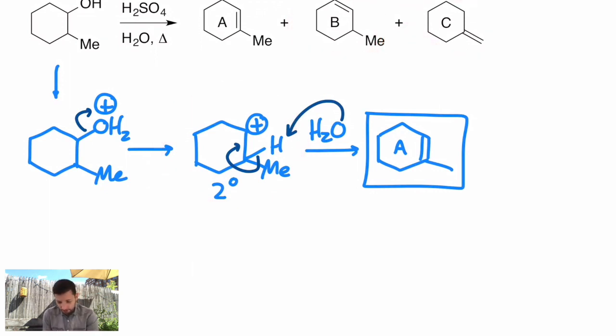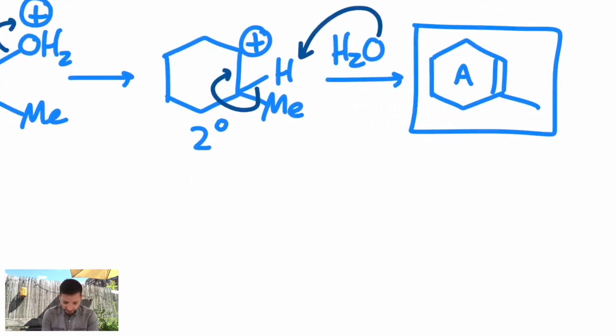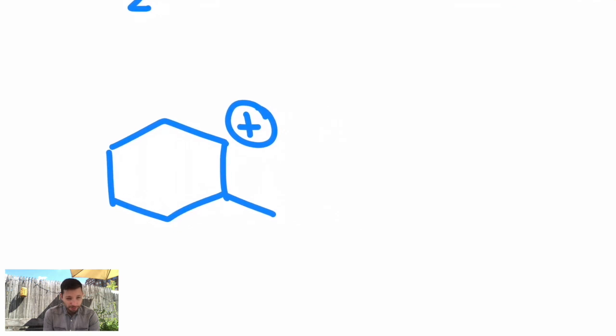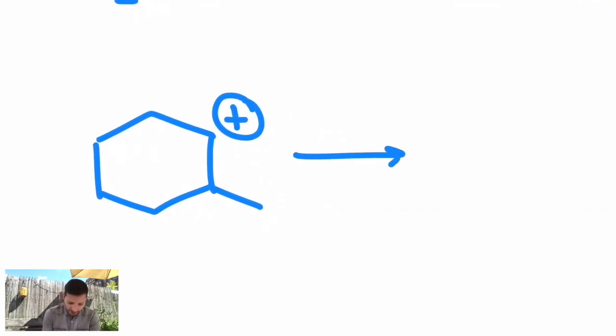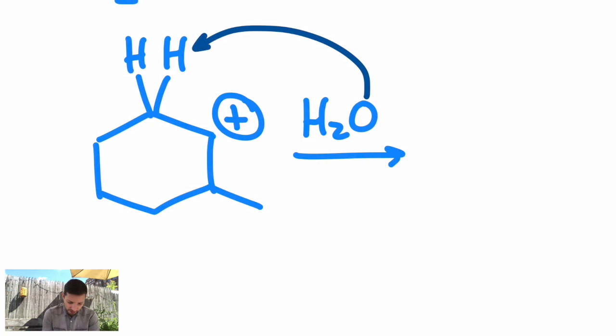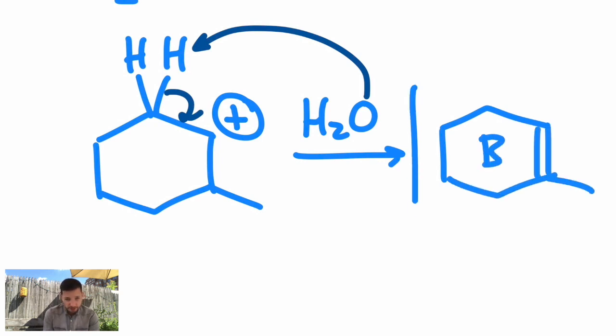Okay, let's see how you did. I'm going to redraw that same carbocation. This is the only cation you can get in the beginning of this mechanism, this secondary cation. To get product B, it's actually not that complicated. Product B is just the non-Zaitsev. That's removal from one of the beta-hydrogens where they are more abundant. Draw an arrow from the water, the H, the CH bond breaks, and you form your pi bond. And there's product B.